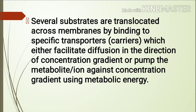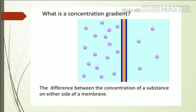Concentration gradient होते क्या हैं? इसमें बीच में membrane है और इसके left side और right side में particles हैं, पर left side में particle का concentration ज़्यादा है as compared to right side. तो ये जो difference है particle के concentration में on either side of a membrane, इसको कहते हैं concentration gradient. In the direction of concentration gradient means high concentration से low concentration में जाना, and against concentration gradient means low concentration से high concentration में जाना energy को use करके.